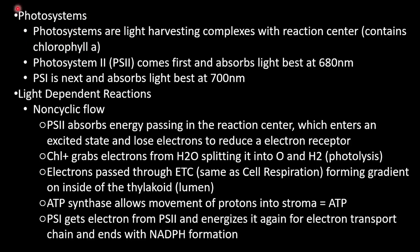Photosystems are light-harvesting complexes with a reaction center containing chlorophyll a. Photosystem II comes first and absorbs light best at 680 nanometers — it's called Photosystem II because it was discovered second. Photosystem I is next and absorbs light best at 700 nanometers.